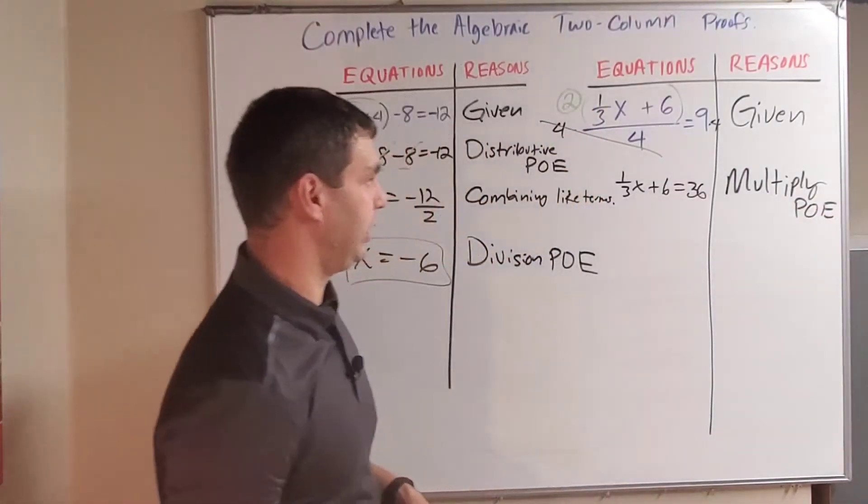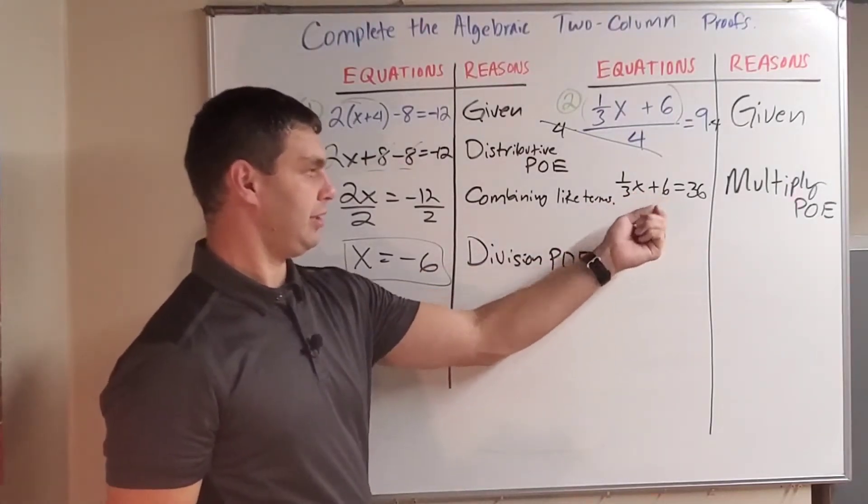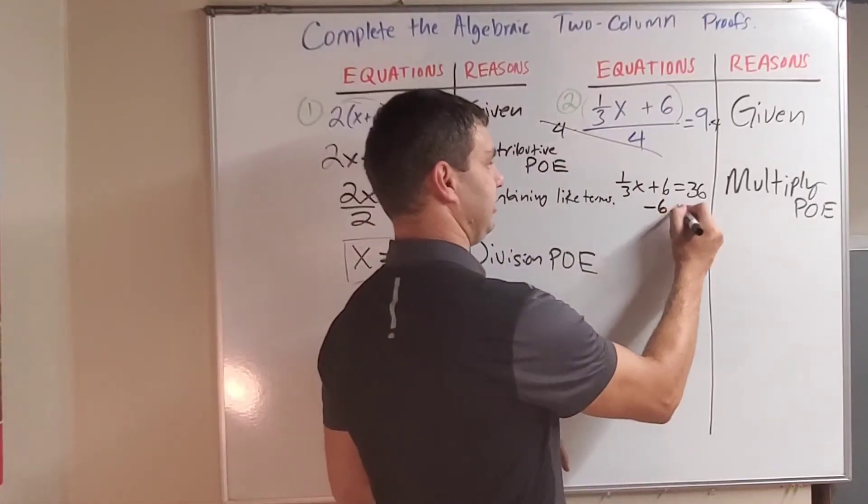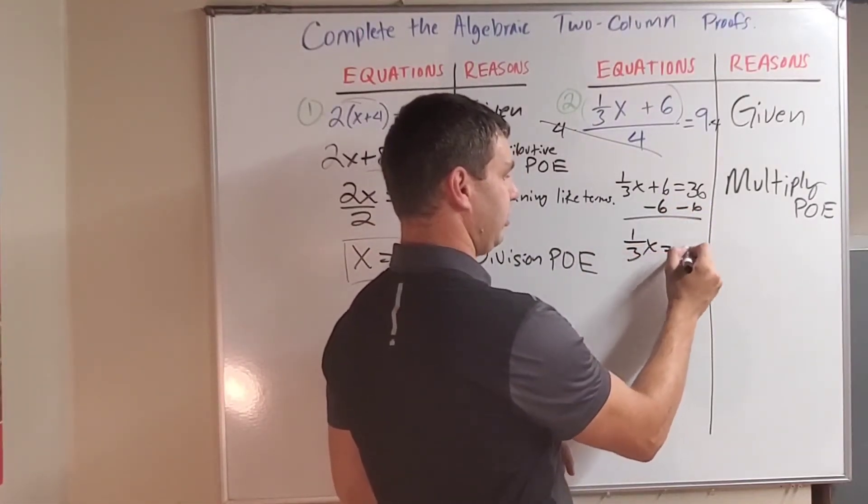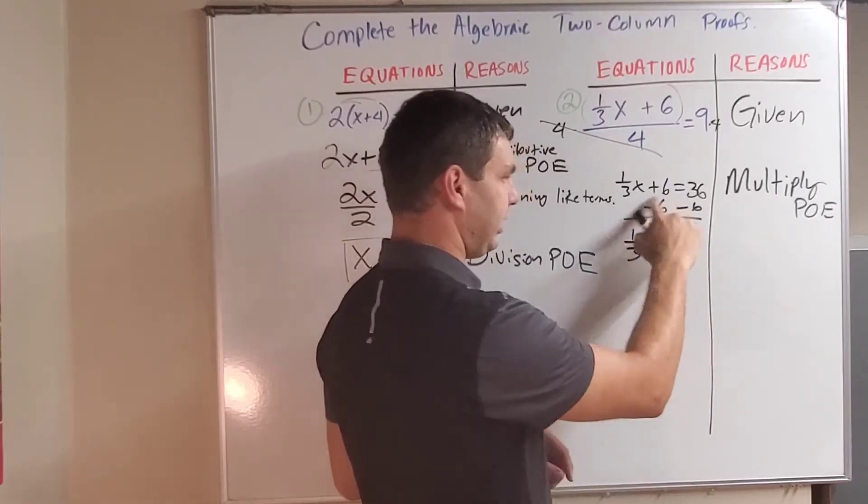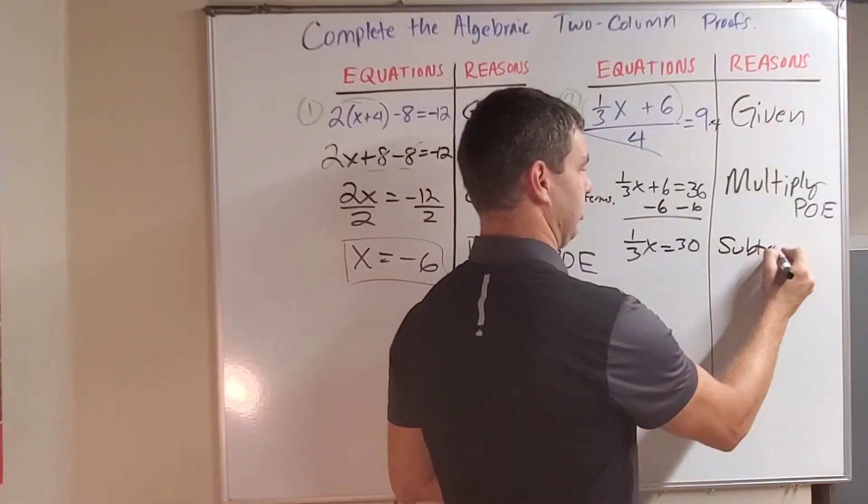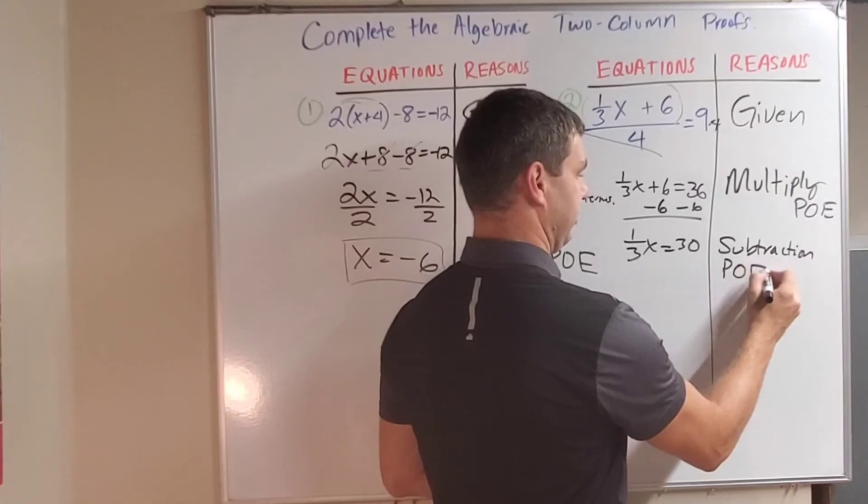What do we have next? We have 1/3x + 6 = 36. Better get rid of 6 first by subtracting 6 on both sides. And now I have 1/3x = 30. Again, I did that because I subtracted 6 on both sides. So this is the subtraction property of equality.